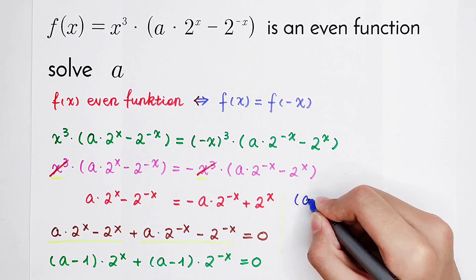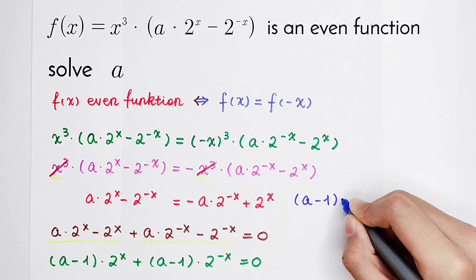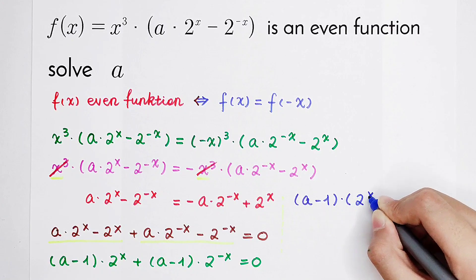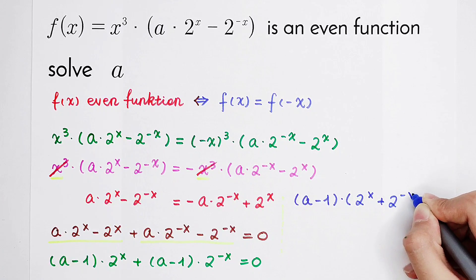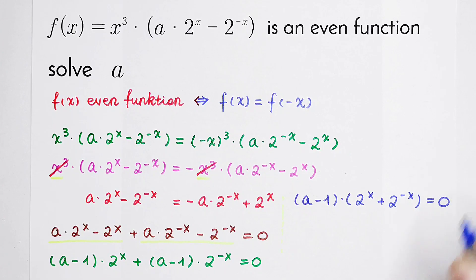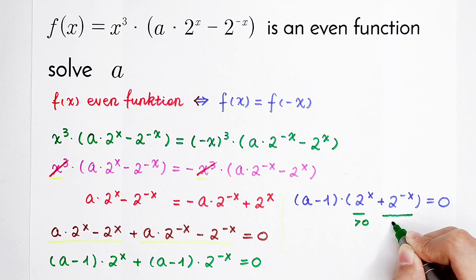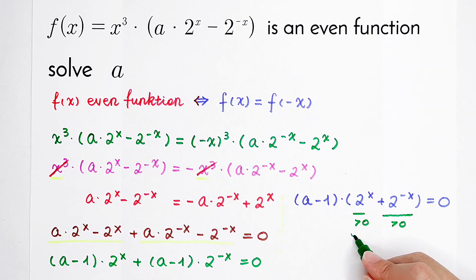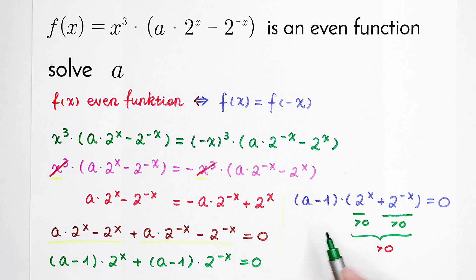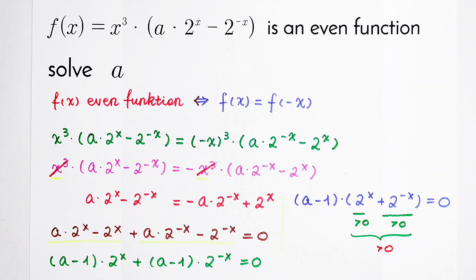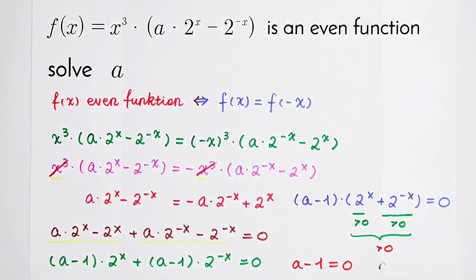So this becomes a minus 1, times bracket of 2 to the power x plus 2 to the power minus x, is equal to zero. Now, 2 to the power x is positive, and 2 to the power minus x is also positive, so positive plus positive is positive. Since a minus 1 times a positive term equals zero, we get a minus 1 equals zero, therefore a is equal to one.